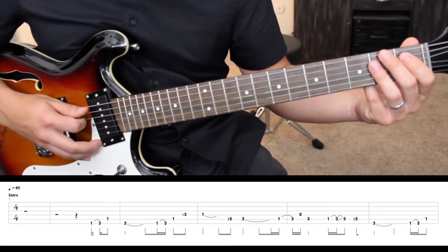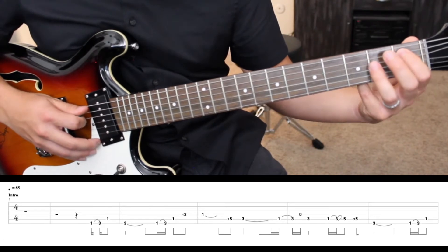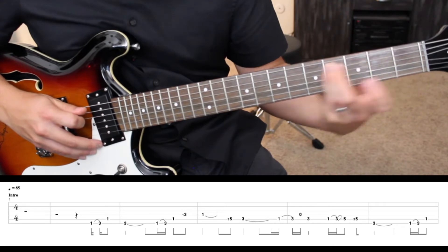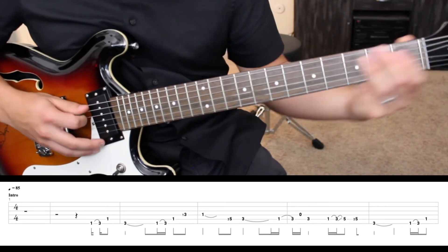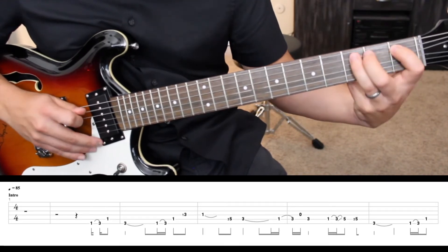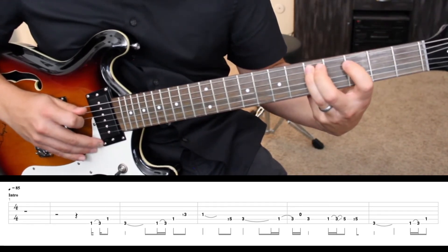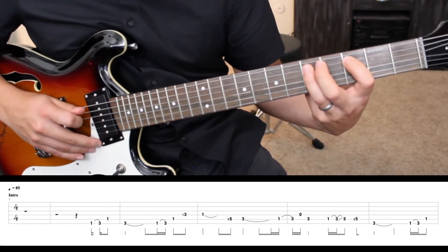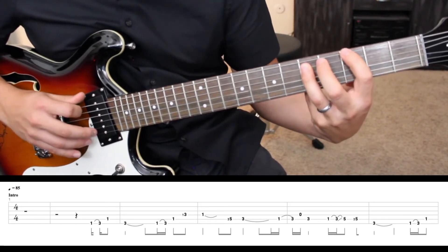Now for our last main challenge. Hammer-on, first to third fret, and then we're going to slide up to the fifth. Here that is again. Then we have the grace note hammer-on, three to five. And then we end on third fret of the sixth string.